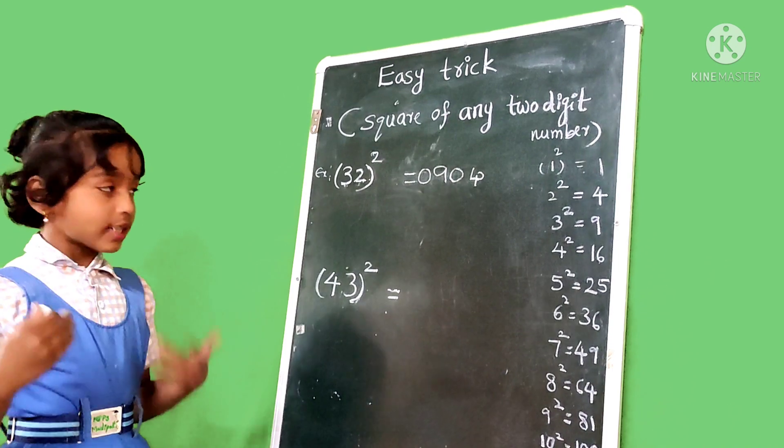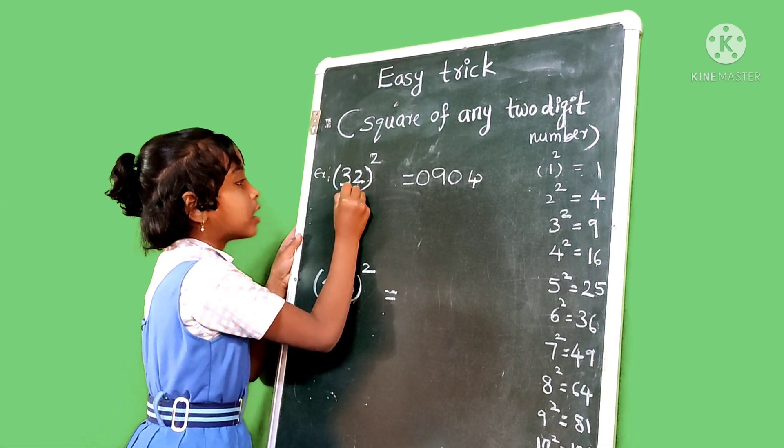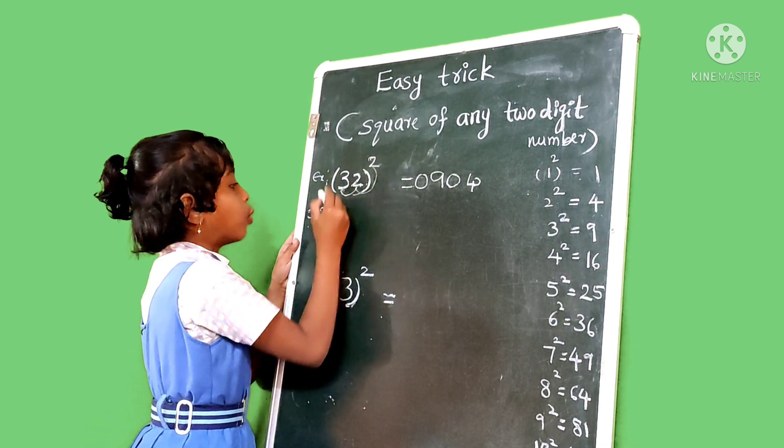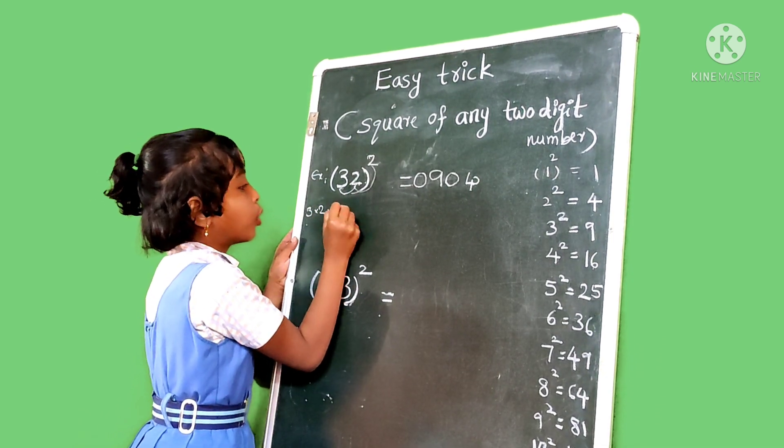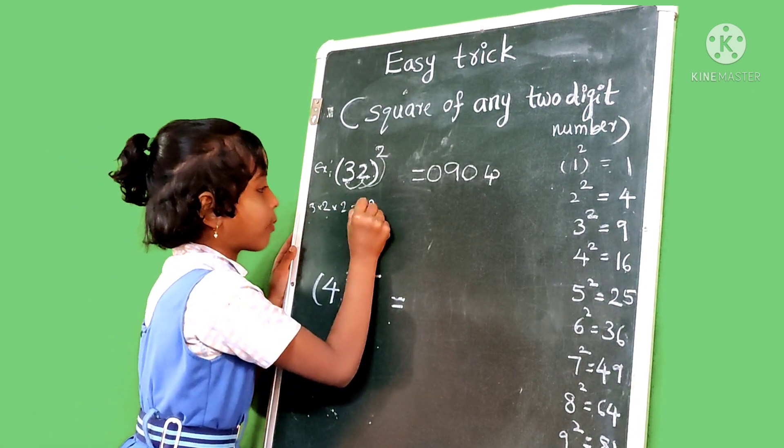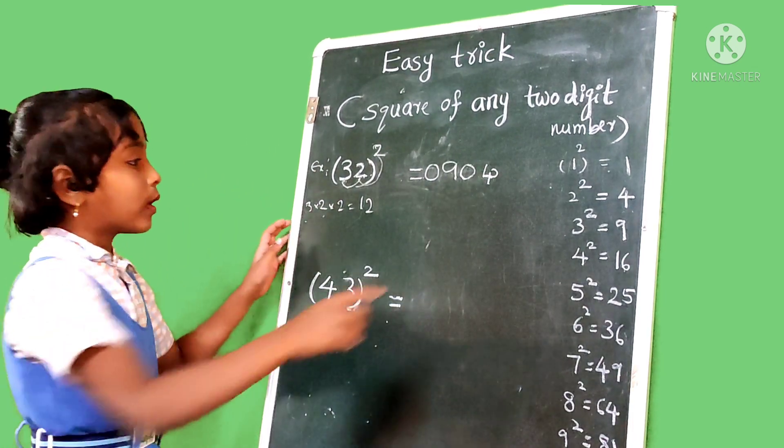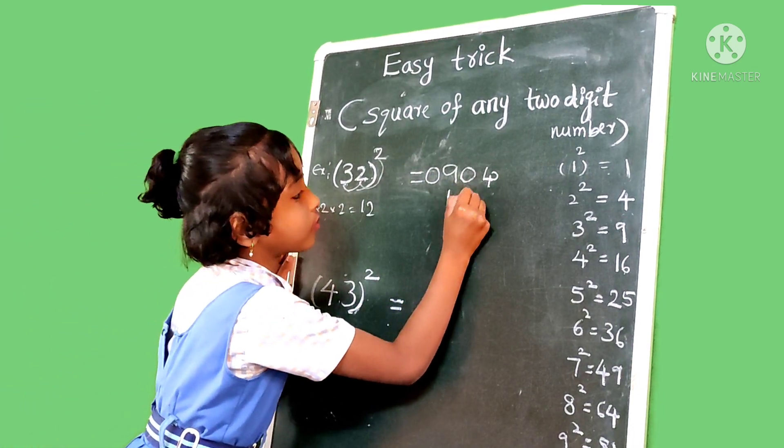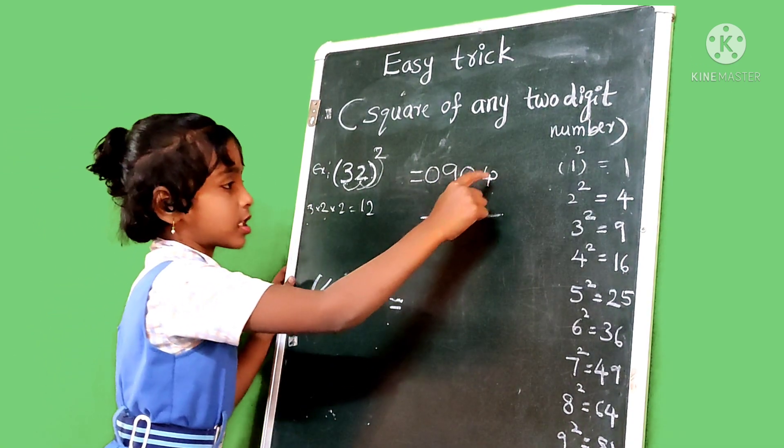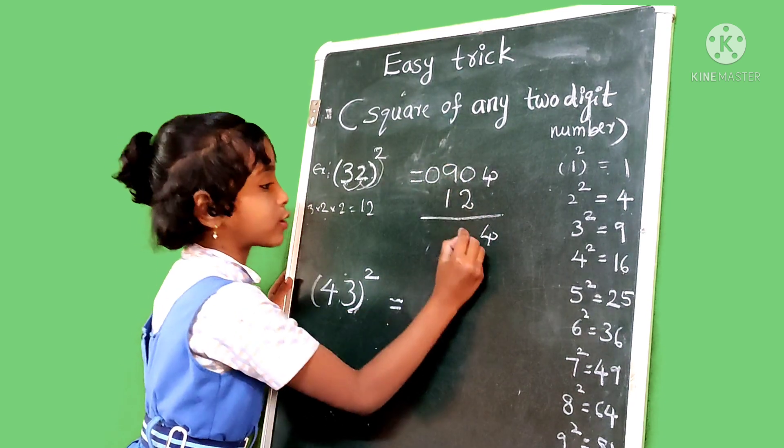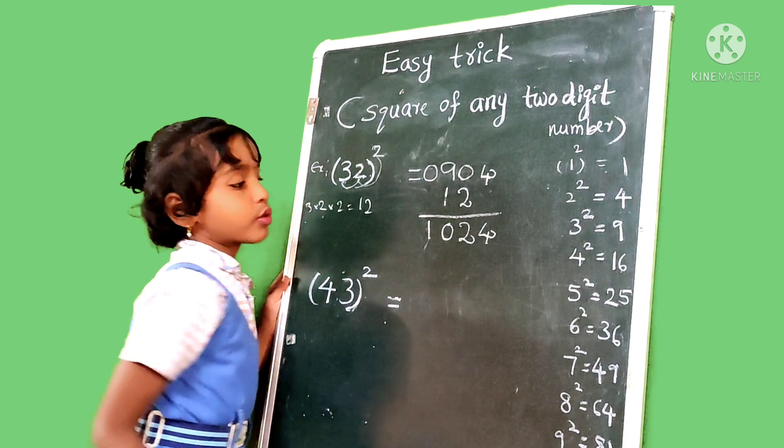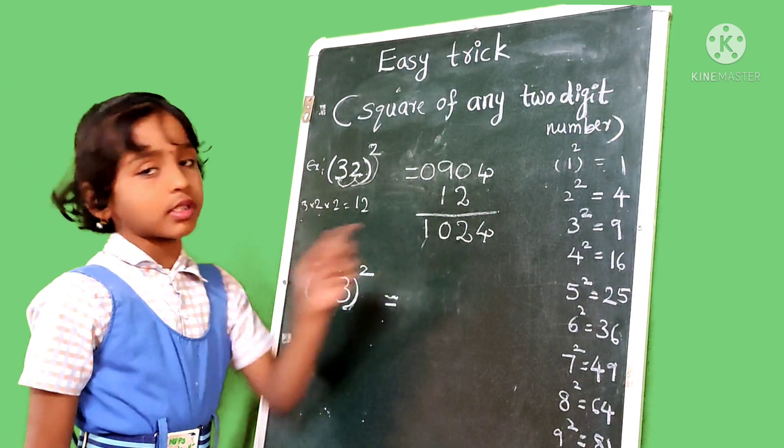Then next we multiply 3 and 2, and 2 and 2. So 3 times 2 is 6, and 6 times 2 is 12. And we leave units place and write 12. And we add these numbers. 4 as this 4, 0 plus 2 is 2, 9 plus 1 is 10. So 32 squared is 1024.